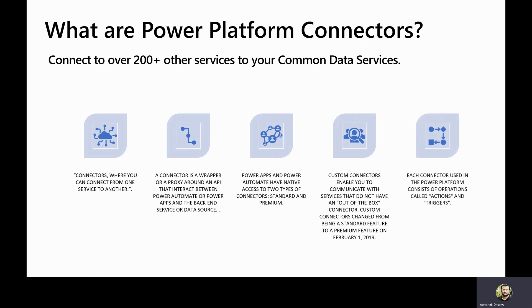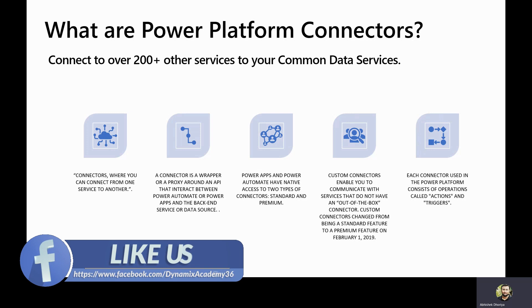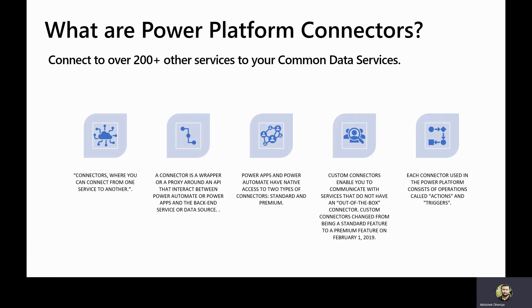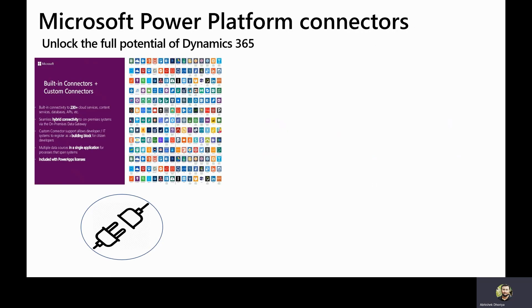Each of these connectors used in Power Platform consists of operations called actions and triggers. There are basically two components associated with a Power Platform connector: actions and triggers. Actions are what you want to perform using that connector, and triggers, as the name suggests, define on what event you want to perform those actions.